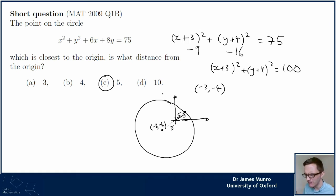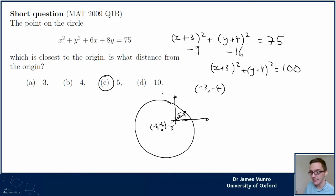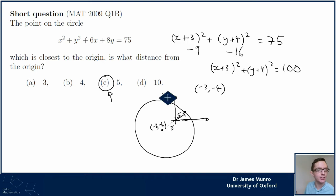We end up at point (3, 4). But of course we're not actually asked for the coordinates - we're just asked for the length, and that's five. The option 10 has been included to catch people out, but I don't think it actually caught anyone out in chat.